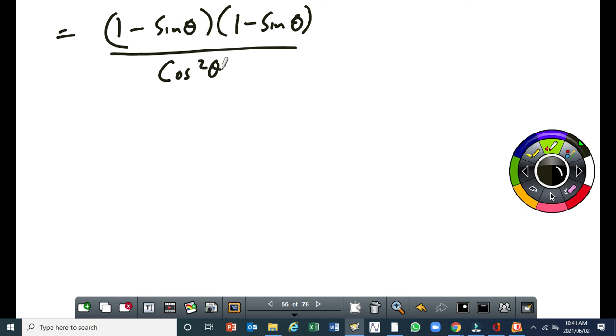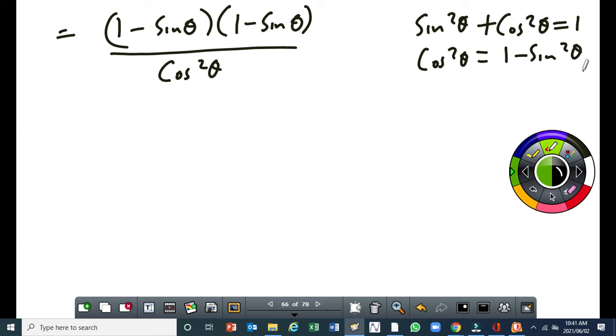Then, I know that from the fundamental identity sin squared θ plus cos squared θ equal 1, that cos squared θ is equivalent to 1 minus sin squared θ. And this is actually a difference of two squares.